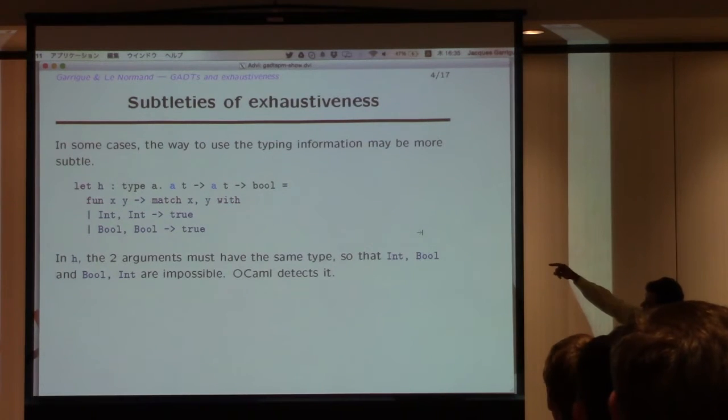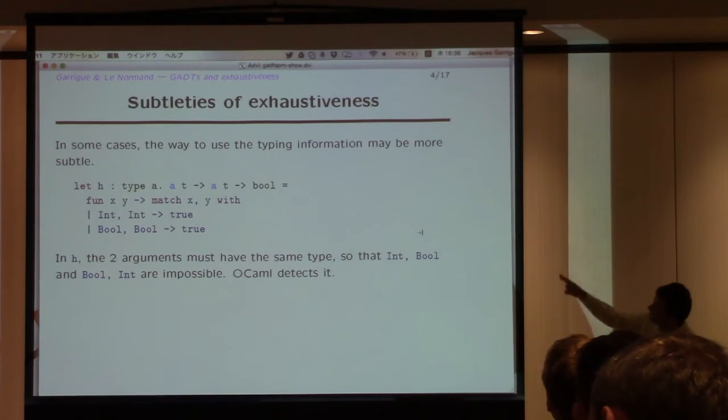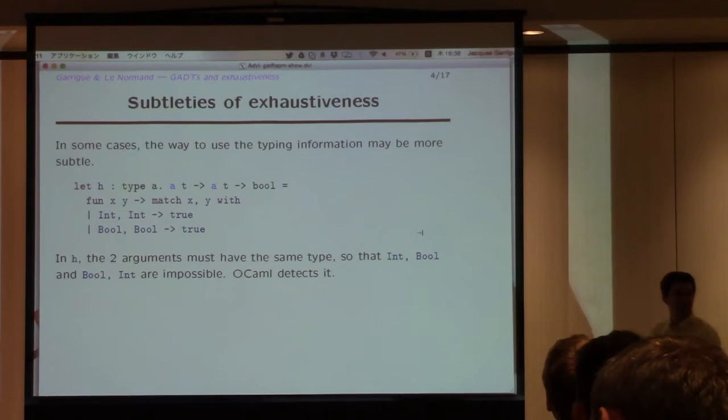So what you see here is that if one is int, the other must be int. So the combination int bool will not be compatible with the type constraints we have here. So OCaml detects this properly.